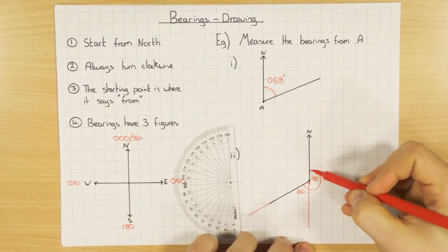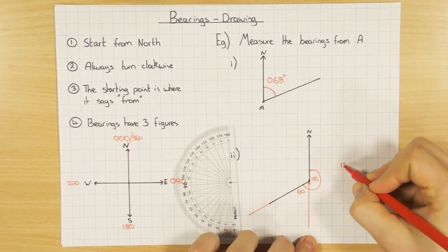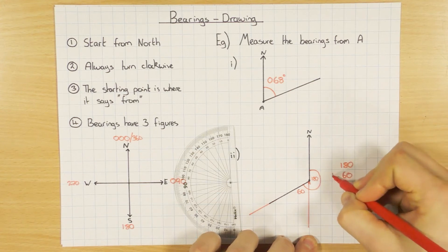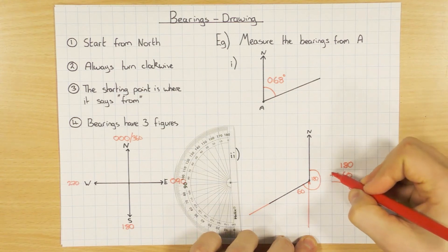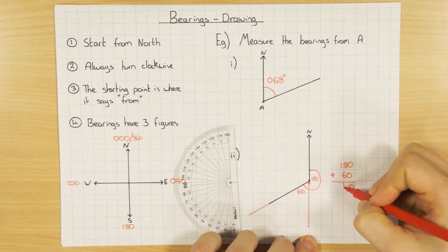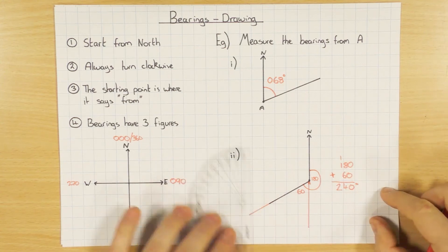And all you do, because you want the whole thing, is just do 180 plus 60. You could do this in your head, I'm just using the column addition to reinforce that method. Six and eight is fourteen. So you get 240. The bearing for this one would be 240 degrees.